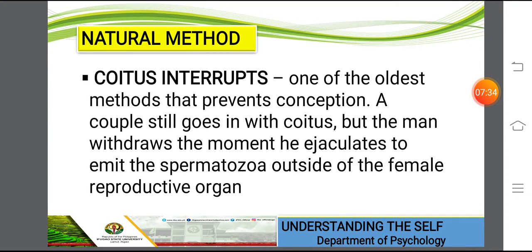Another method is coitus interruptus, one of the oldest methods that prevents conception. A couple still goes through coitus, but the man withdraws the moment he ejaculates to emit the spermatozoa outside of the female reproductive organs. No sperm is introduced, so this is considered a natural method.